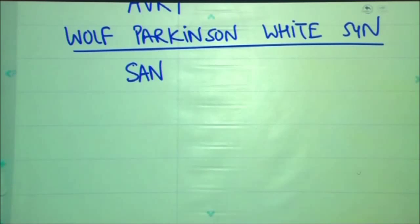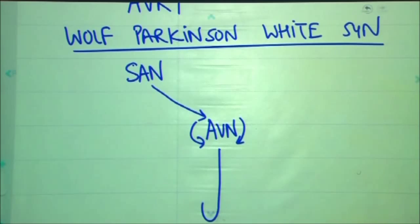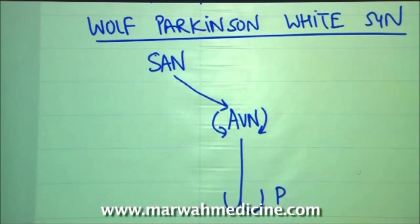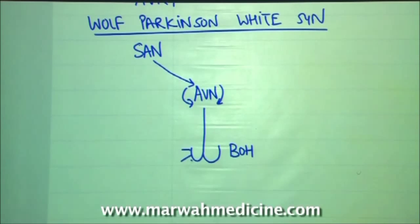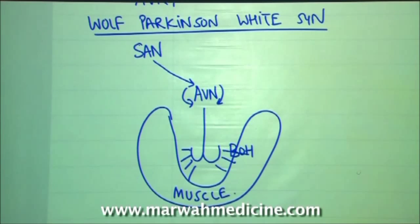In normal individuals, the current starts from the SA node, goes to the AV node, then to the bundle of His, and then to the two fascicles. Once the current goes into the bundle of His via the network of Purkinje fibers, the current innervates the cardiac muscle.